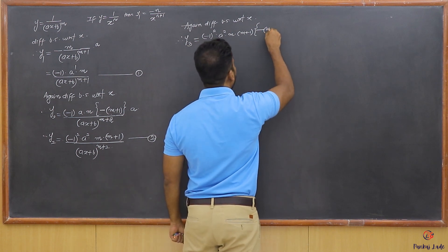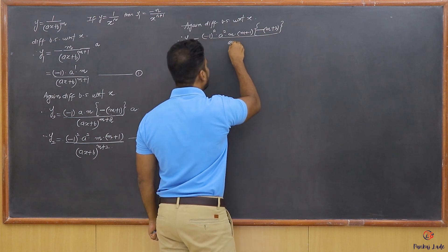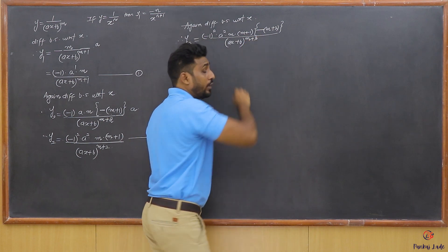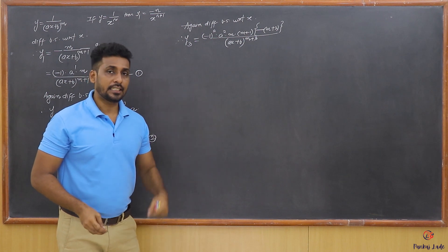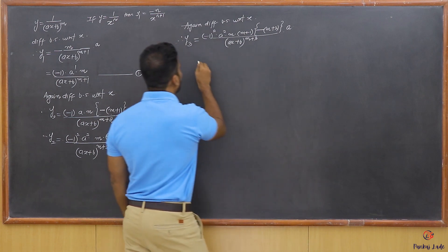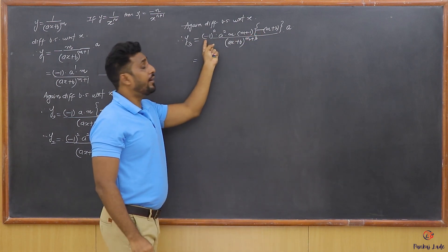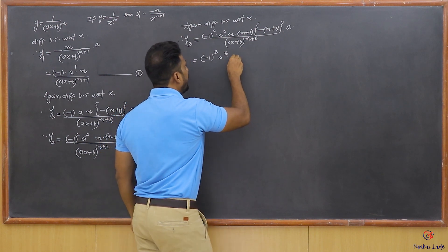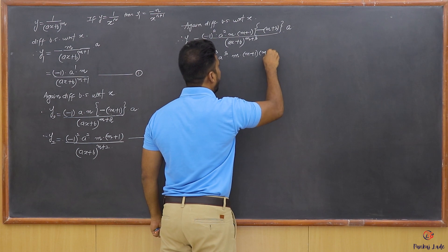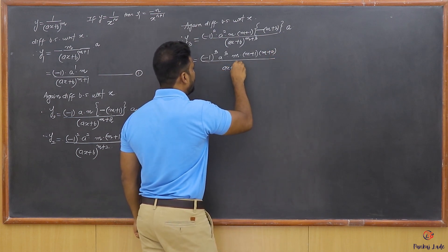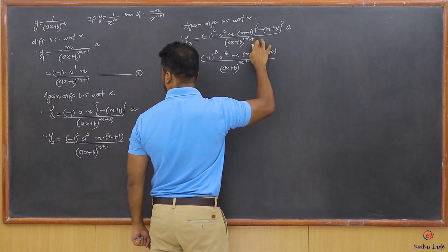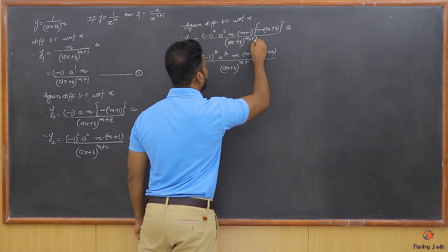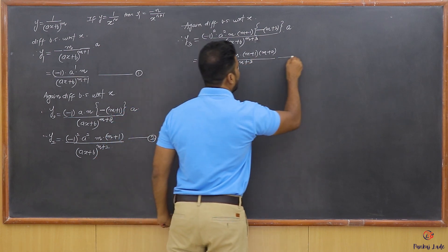In the denominator, raise the power by 1: m+2+1 = m+3. And since it is ax+b (not x), differentiate again to get a. Generalizing: y3 = (-1)^3 · a^3 · m(m+1)(m+2) / (ax+b)^(m+3). That's the third relation.